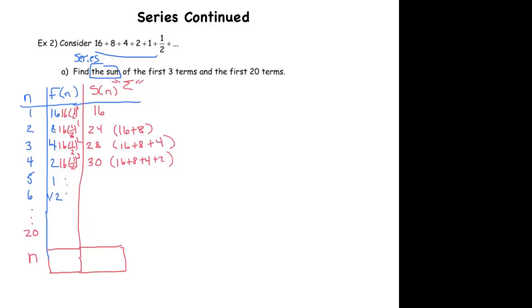And so, that suggests that the 20th term is going to be 16 times a half, not 20 times. Let's see. When I plug in 4, it's 16 times a half three times. When I plug in 3, it's 16 times a half twice. So this is going to be 16 times a half 19 times for the 20th term. And for the nth term, it's 16 times a half to the n minus one.